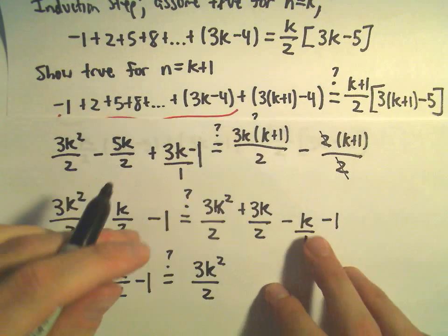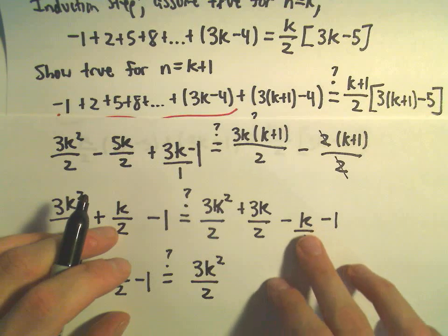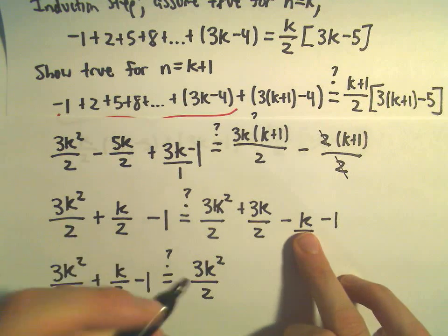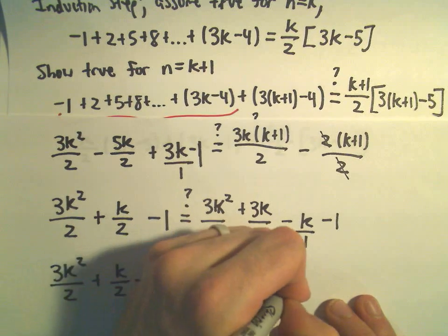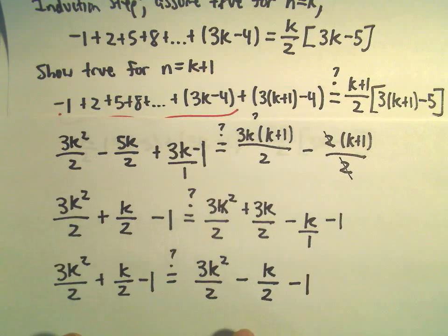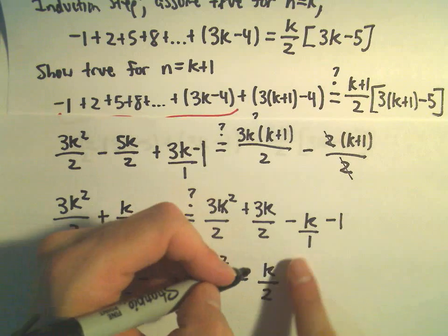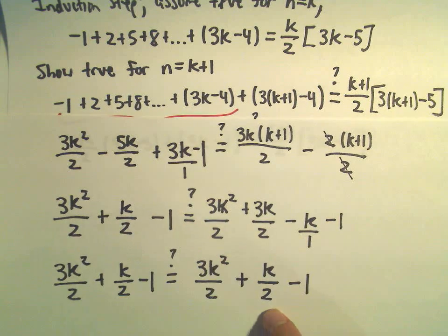If I multiply my k over 1, if I multiply top and bottom by 2, we would have 3k minus 2k, which would be negative k over 2 minus 1. Whoops, how about not negative k, how about positive k over 2, right?